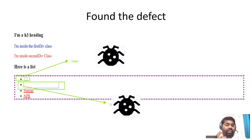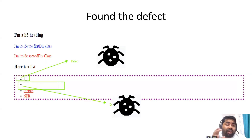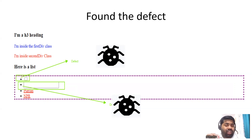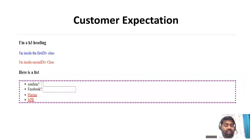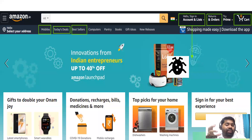When the tester started to test, they were not able to find what was expected. You can see this is the page as per customer requirement, but the developer had developed something different. The tester found something is missing — this is the defect. The actual and expected are not matching, and this is the defect. I am giving minor examples just for illustration.